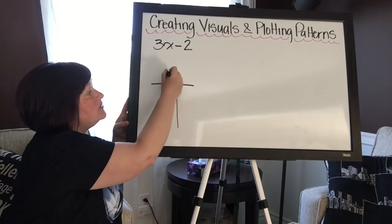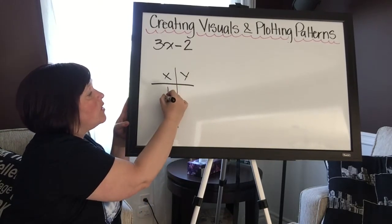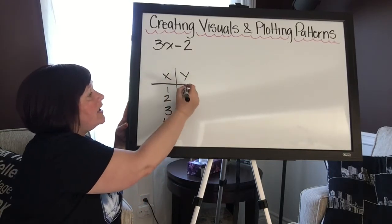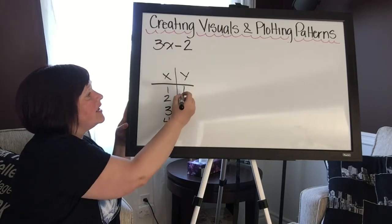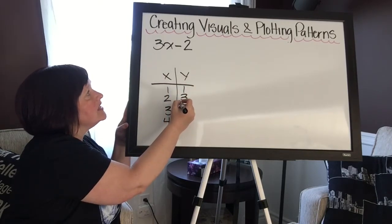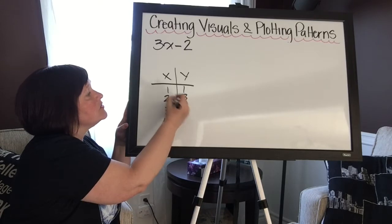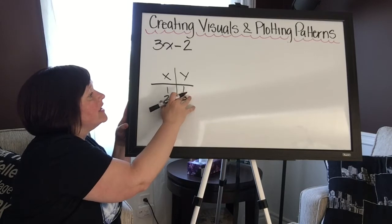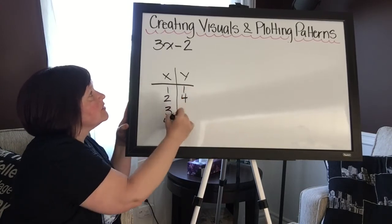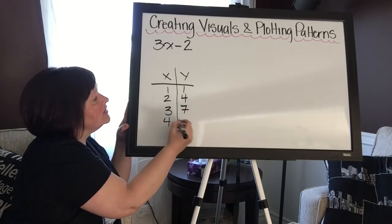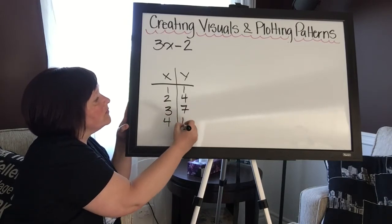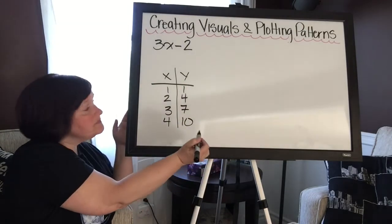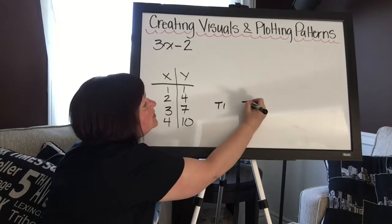Now the first one that I've shown you here, 3x minus 2, we do our table of values: x, y, one, two, three, four. Three times one is three minus two is one. Two times three is six minus two—no, I made a mistake somewhere. Three times one is three minus two is one. Two times three is six minus two is four. Three times three is nine minus two is seven, and four times three is twelve minus two is ten. All right, so I've got my values here. Okay, and then I've got term one, term two.